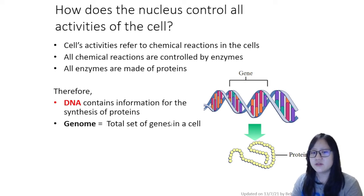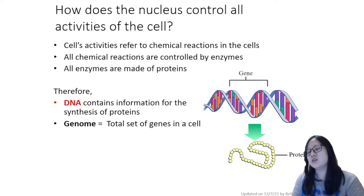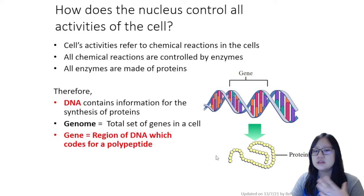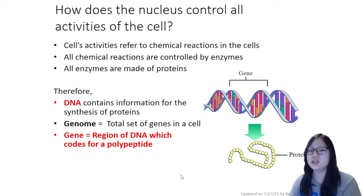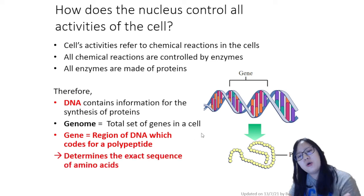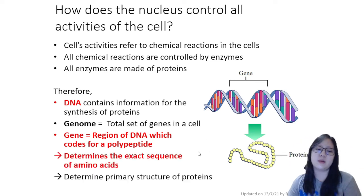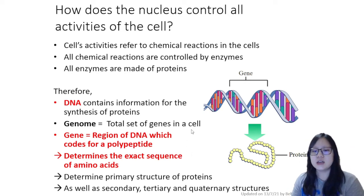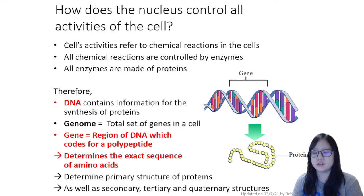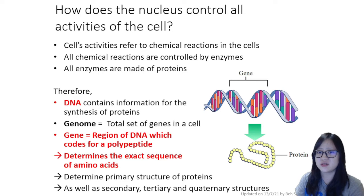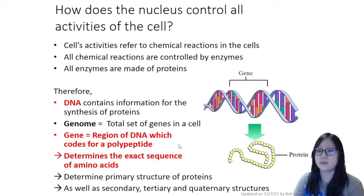DNA contains information for the synthesis of proteins. The total set of all genes is called the genome. A gene is a specific region of DNA which codes for a polypeptide — that is an important definition. These genes code for individual proteins; they determine the exact sequence of amino acids, the primary structure, and therefore the secondary structure and function. In conclusion, the nucleus controls all activities of the cell by DNA: it has genes that code for proteins and determine the exact sequence of amino acids.